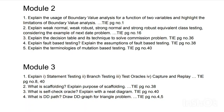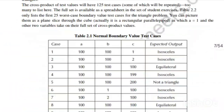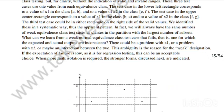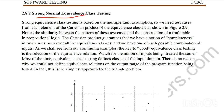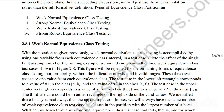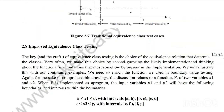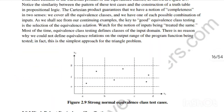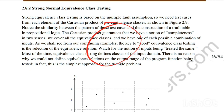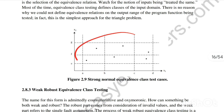The next question is: explain weak normal, weak robust, strong normal, and strong robust equivalence class testing, considering the next date problem as an example. Go to page number 16 in the TKTG notes to find this content. All four concepts — strong normal, weak normal, and the robust variants — are under the topic of equivalence class testing. Write the definition, explanation, and draw any diagrams or graphs provided.